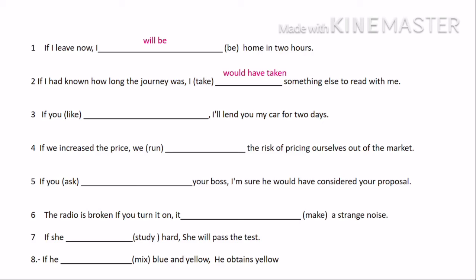Number three: 'If you like, I'll lend you my car for two days.' This is easy because the future with 'will' means first conditional, and the first part is simple present. So it's first conditional. Number four: 'If we increased the price, we [would] run the risk of pricing ourselves out of the market.' The verb 'increased' is past, so it's second conditional. The second part uses 'would' with the verb in base form — would run.